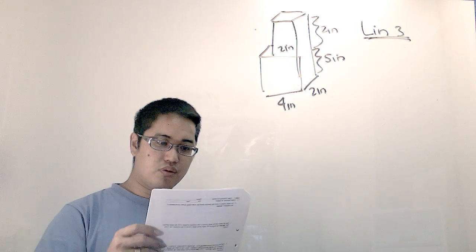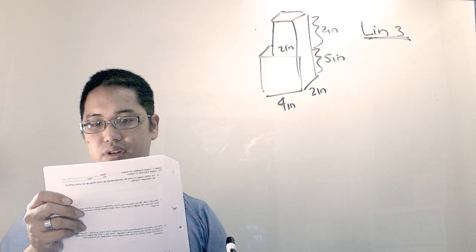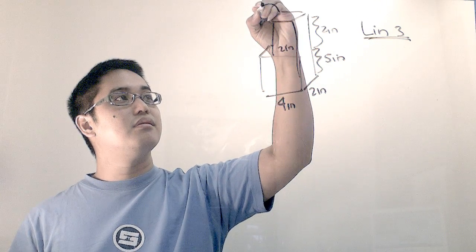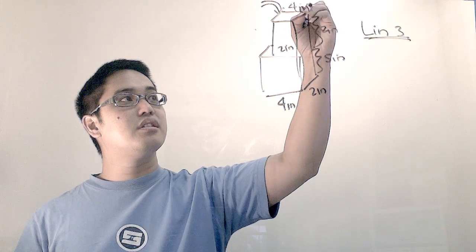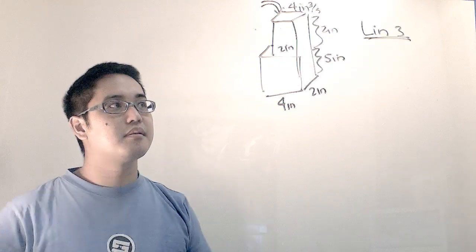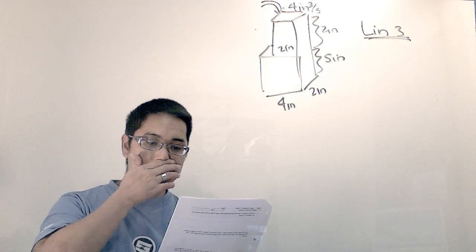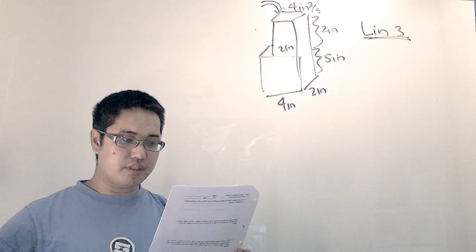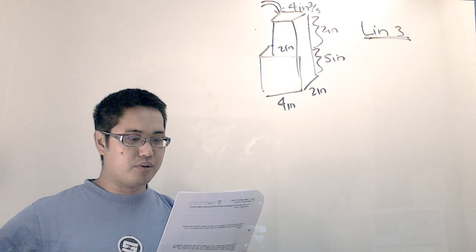The hose Paco uses to fill the container delivers 4 cubic inches of water every second. So it's going to put water here at 4 inches cubed per second. How fast does the height of the water in the lower portion of the container rise every second? Please give your answers in inches per second. Alright.